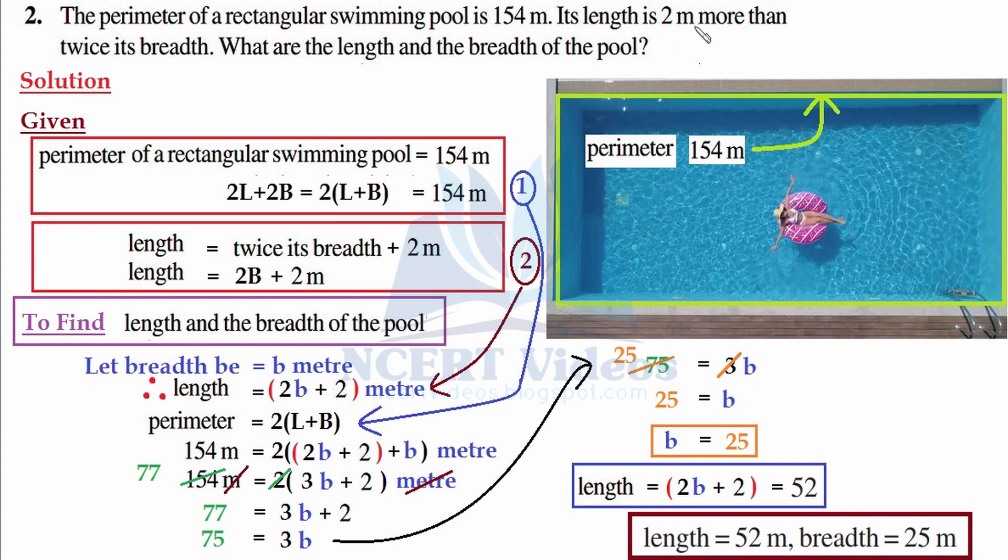it is 2 meters more, that means 2 meters extra in distance, than twice its breadth. Now when you understood it carefully, you got everything correct.